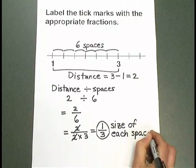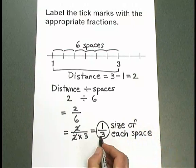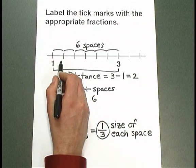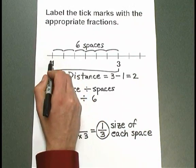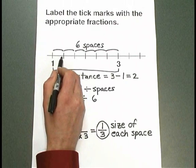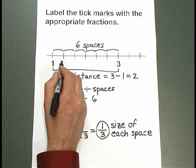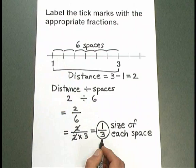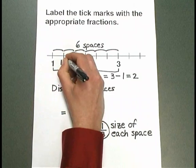That's the important number here because that's the number we need to add on as we move from one tick mark to the next. We start at 1 and then we add on the size of a space as we move to the next tick mark. If I take 1 plus 1 third, I get 1 and 1 third.